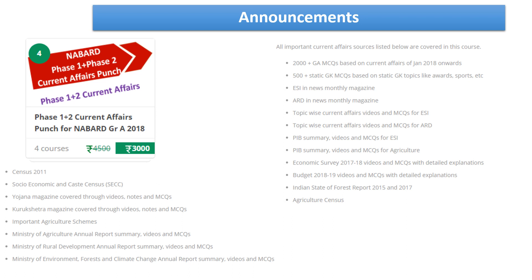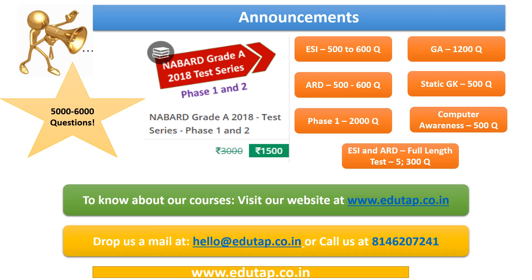We also provide NABARD Phase 1 plus Phase 2 current affairs punch course for Rs. 3000. It is a consolidated course wherein you get all the current affairs at one place. We have also come up with a new course — NABARD Grade A 2018 test series for Phase 1 and Phase 2, available for Rs. 1500. If you have any doubt, visit www.edutab.co.in, drop us a mail at hello@edutab.co.in, or call us at 8146207241.